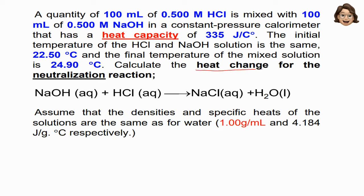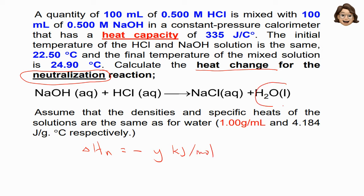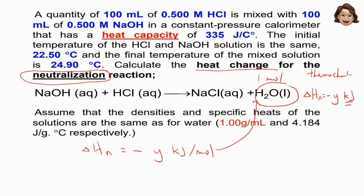Next, calculate the heat change for neutralization. When we see the word 'neutralization,' the answer is negative y kilojoule per mole, because we are referring to one mole of water. This is for calculation. If you want to write the thermochemical equation, then at the end of the equation you write negative y kilojoule only.